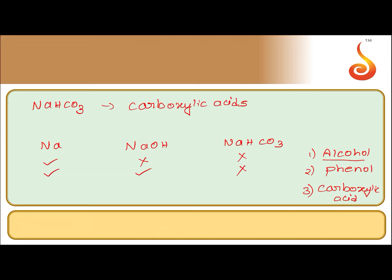To recap: alcohols, phenols, and carboxylic acids are all acidic in nature. Alcohol is a very weak acid — it reacts with metals and liberates hydrogen gas but will not react with sodium hydroxide and will not liberate carbon dioxide with sodium bicarbonate. Phenols are more acidic than alcohols because the phenoxide ion is more stable.